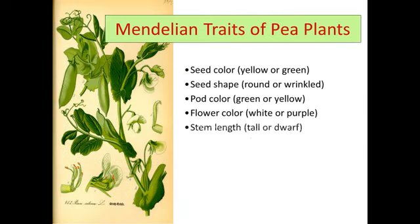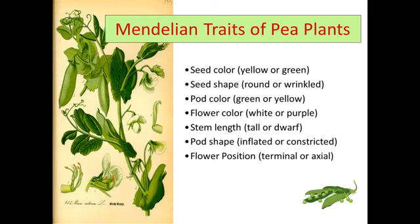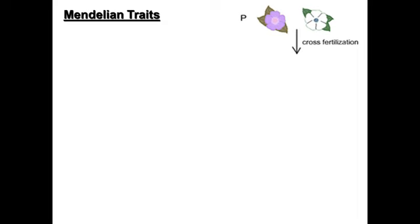Just to quickly review Mendelian traits: when Mendel studied his pea plants, he specifically chose patterns that varied in an either-or fashion. Seed color could be yellow or green, seeds could be round or wrinkled, flowers were white or purple. Nothing varied in an in-between manner. So you might assume that crossing a purple flower with a white flower would produce light purple offspring — just like mixing purple and white paint — but that's not what happens.